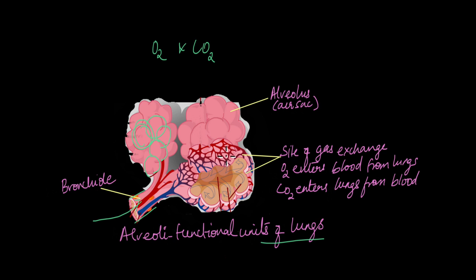And the alveoli conveniently are fed with a lot of blood vessels. Each of these alveolas basically has capillaries that facilitate gas exchange. So at the alveoli, oxygen enters the blood from the lungs and carbon dioxide enters the lungs from the blood.